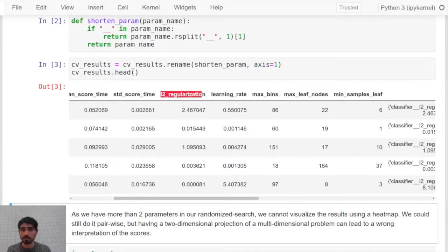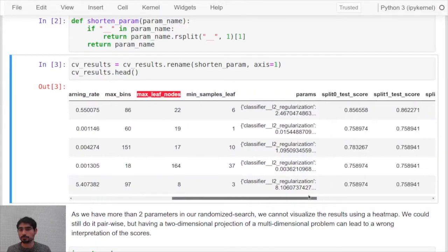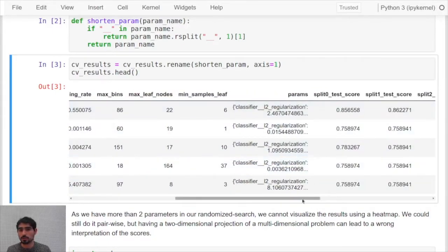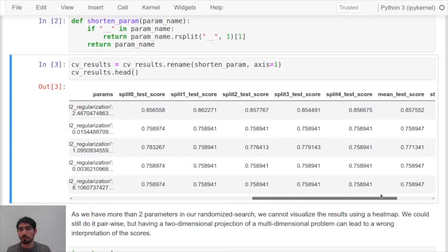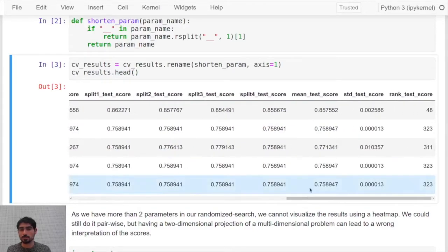Now we can really see which hyperparameters we are tuning, for instance, the maximum number of bins, the maximum number of leaves per each node. In this dataset you can also see the score for each one of the splits in the cross-validation.